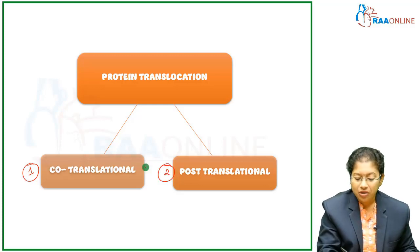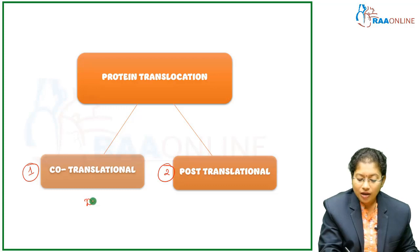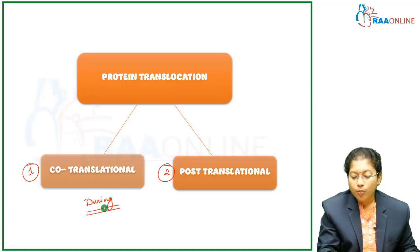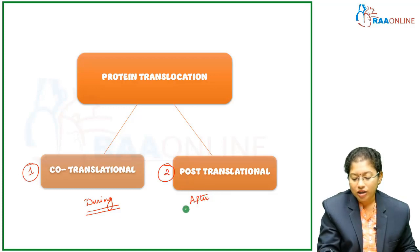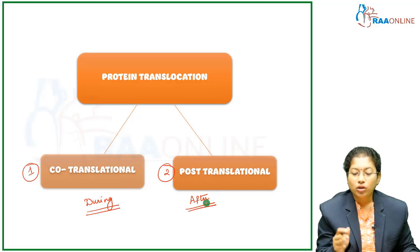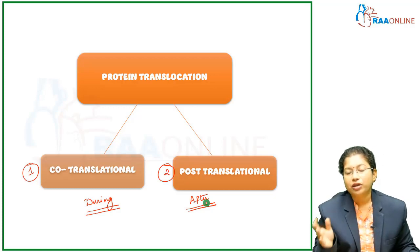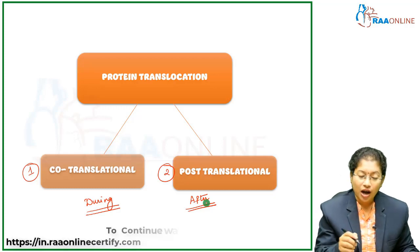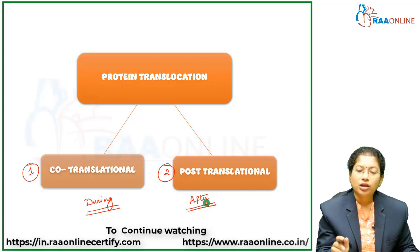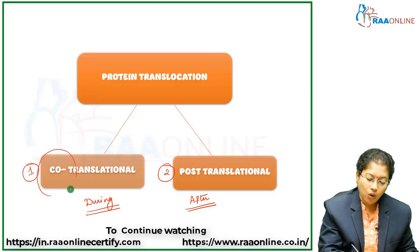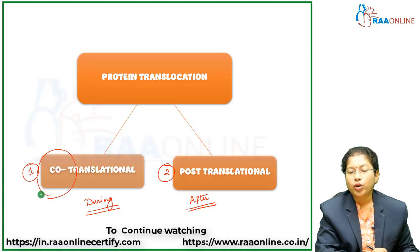The co-translational pathway means it occurs during the process of translation. In the post-translational case, translation is completed first, and then protein translocation takes place — it occurs after translation. When it occurs during translation, we call it co-translational protein targeting.